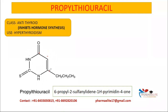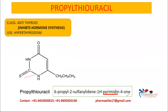The sixth position carries a propyl chain, giving us '6-propyl.' Then we have 2-sulfanylidene, which is the sulfur group attached via a double bond, followed by the pyrimidine heterocyclic ring and 4-one, indicating a keto group at the fourth position. That is the full IUPAC name.